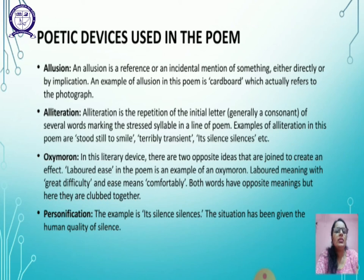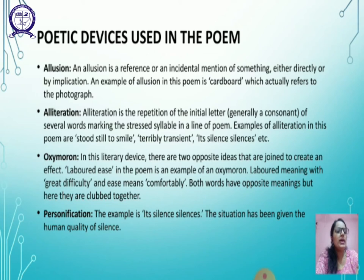Alliteration is the repetition of the initial letter, generally a consonant, of several words marking the stressed syllable in a line of a poem. Examples of alliteration in the poem are: 'stood still to smile,' 'terribly transient,' 'it silences, silences,' etc.